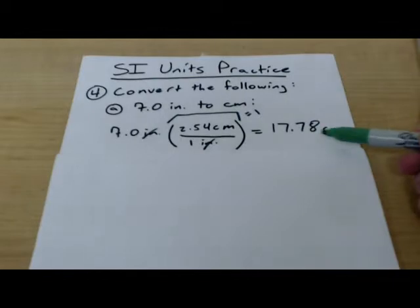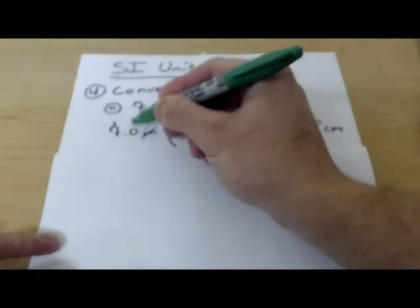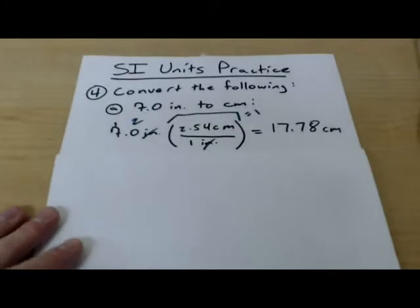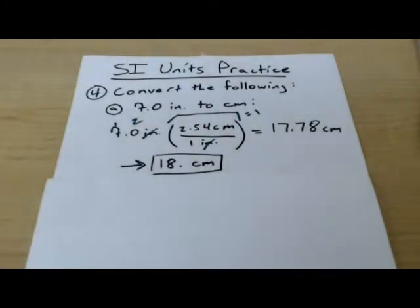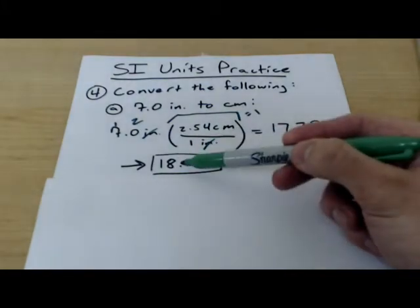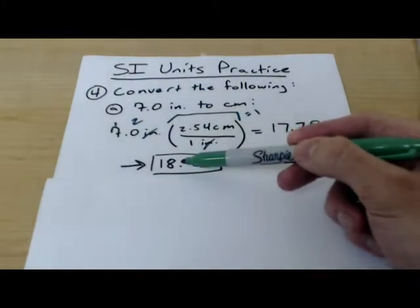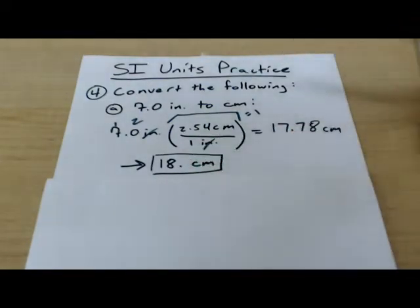We get 17.78 centimeters. But this is not the right answer because of sig figs. Our starting value only has two sig figs. And so, our answer needs to have two sig figs. So, our answer is going to be 18 centimeters with a dot right here. And this just shows that we've measured two digits of the answer.